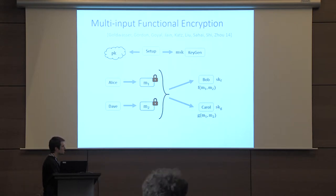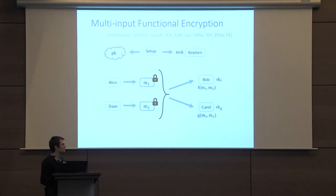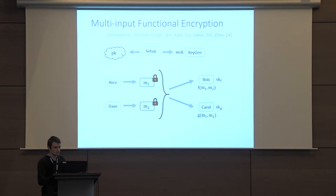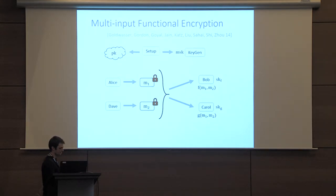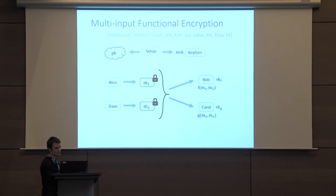A different key for a different function will leak different information. The important part for privacy is to leak only partial information on the encrypted messages — specifically F of M1 and M2. The multi-input setting is useful when the data is distributed among different users, or for example if one user encrypts data at different points in time. This is a useful generalization of a single-input FE, and the important property for privacy is that we want to leak only this partial information on M1 and M2.